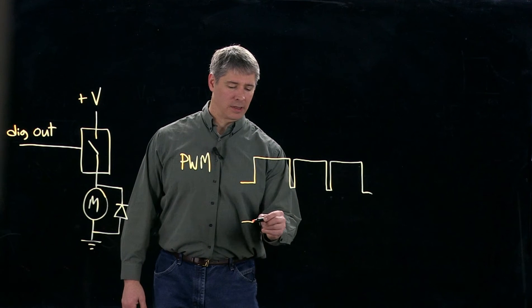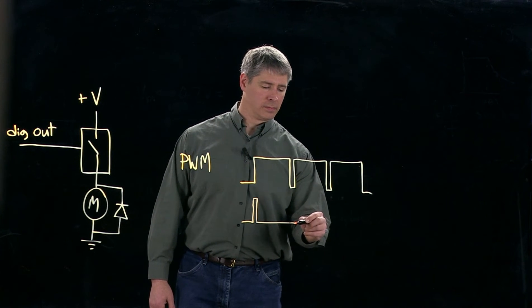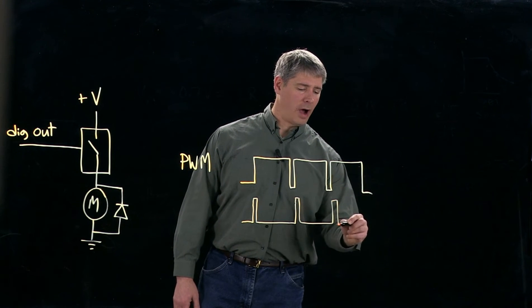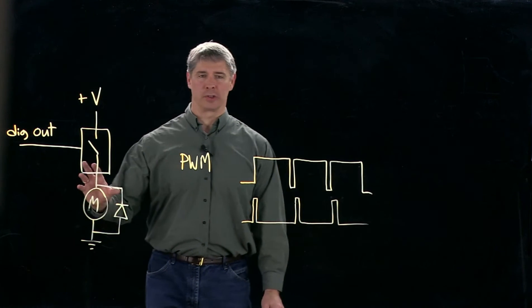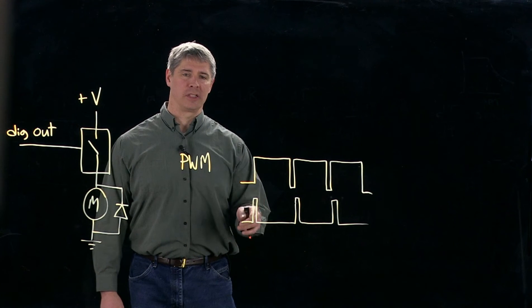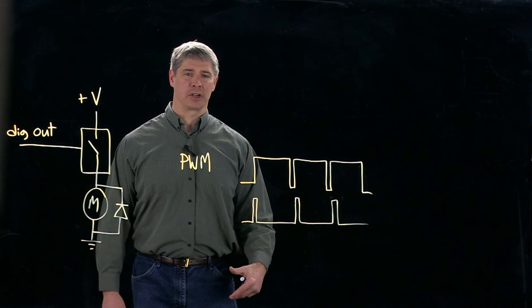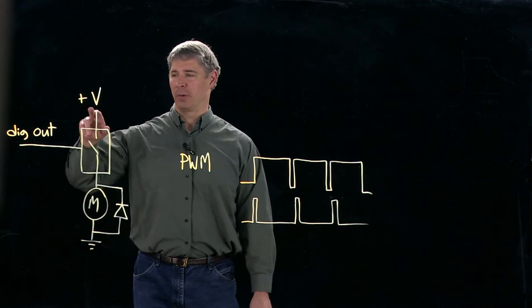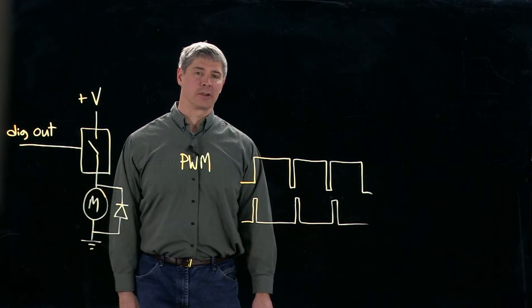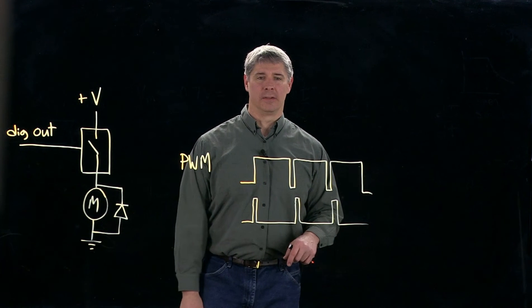On the other hand, if we have something like this, then the switch is off most of the time and we are getting something closer to the motor being off. Based on changing the duty cycle of the PWM, we can essentially achieve an average voltage across the motor between plus V — whatever that is — and zero volts, based on the duration of the duty cycle.